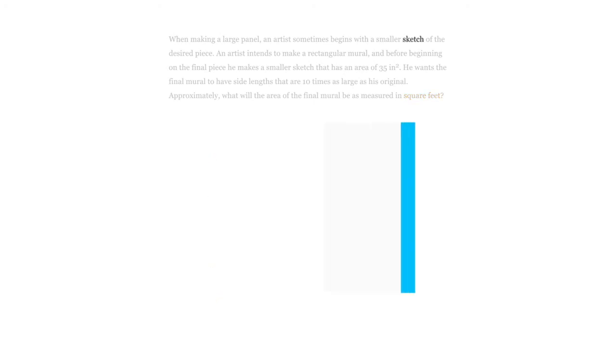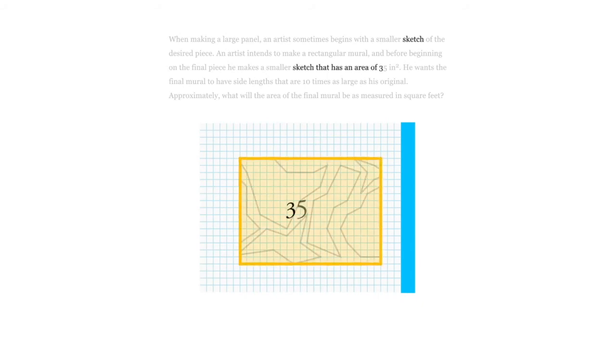So we're given that we have a sketch, and that sketch has an area of 35 square inches. And there are lots of ways to do this, but one of the most common, and frankly one of the easiest, is just come up with a sketch that happens to have an area of 35 square inches. And it's a nice clean one if we say that it's 7 inches on this side and 5 inches on that side.